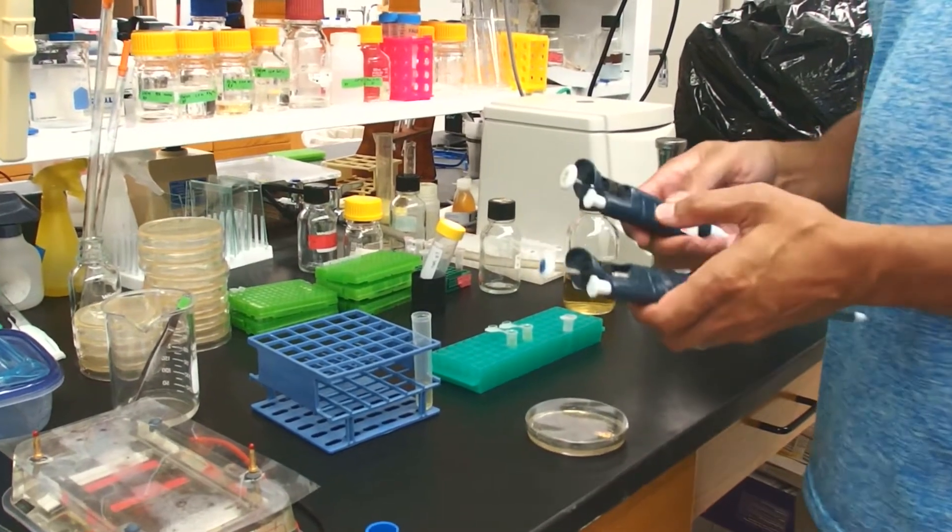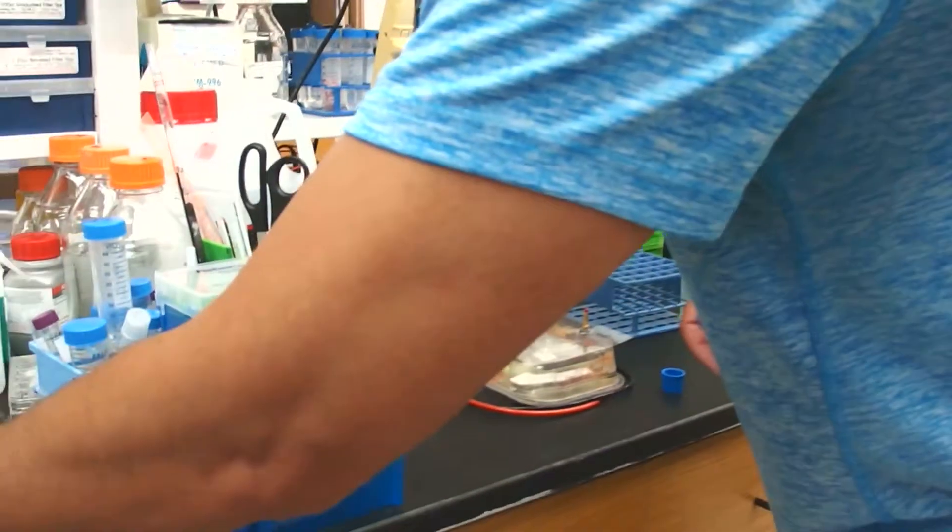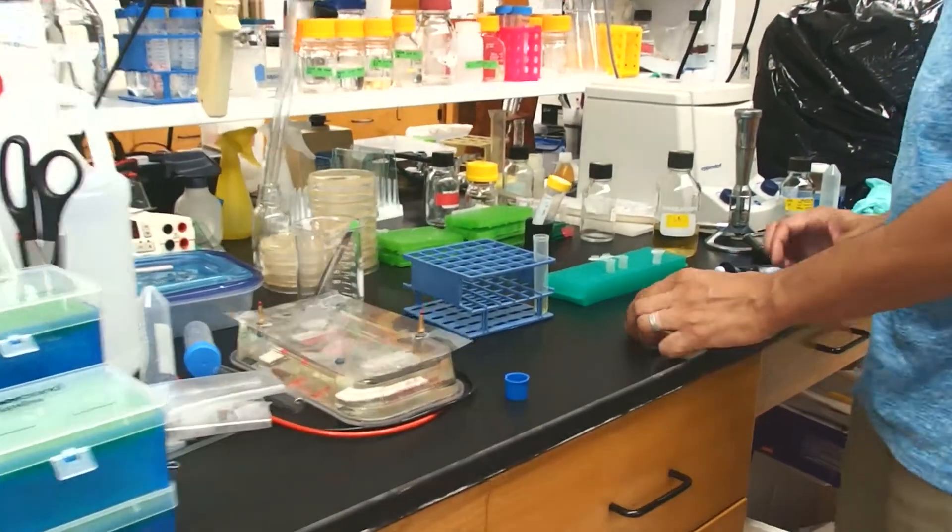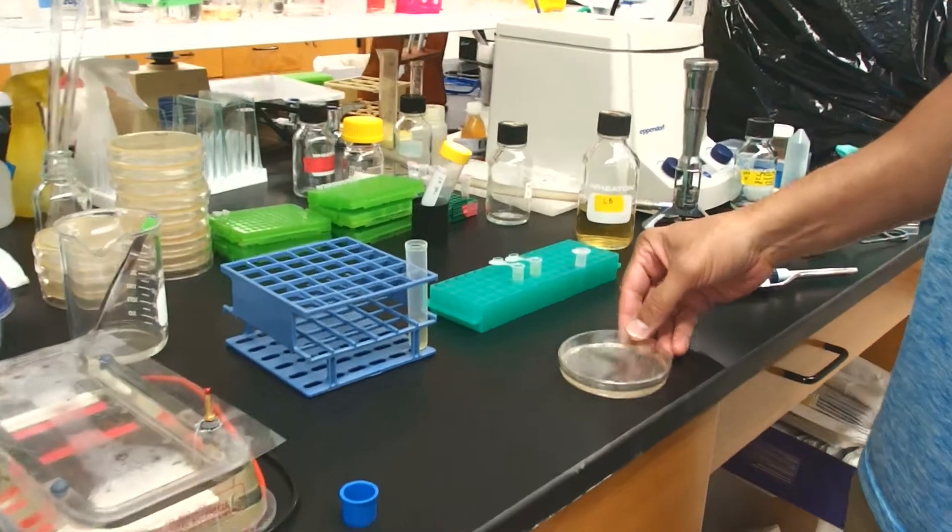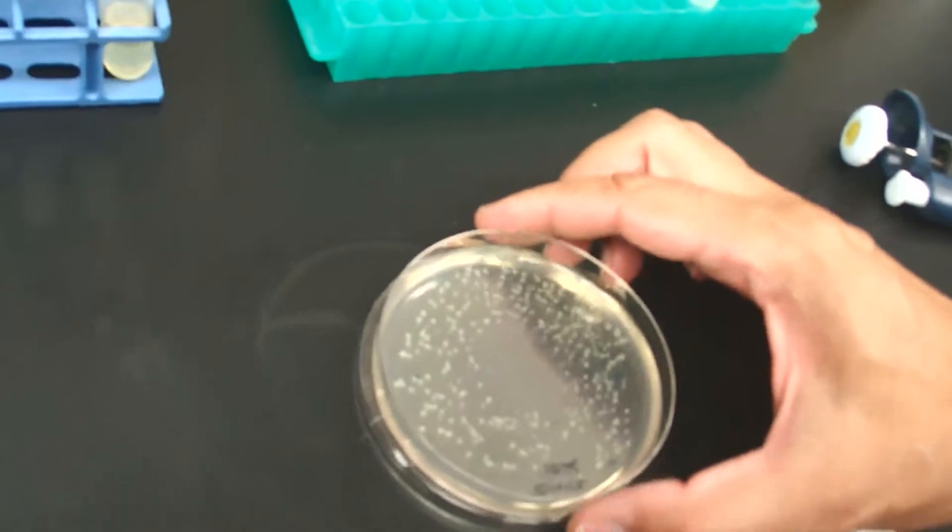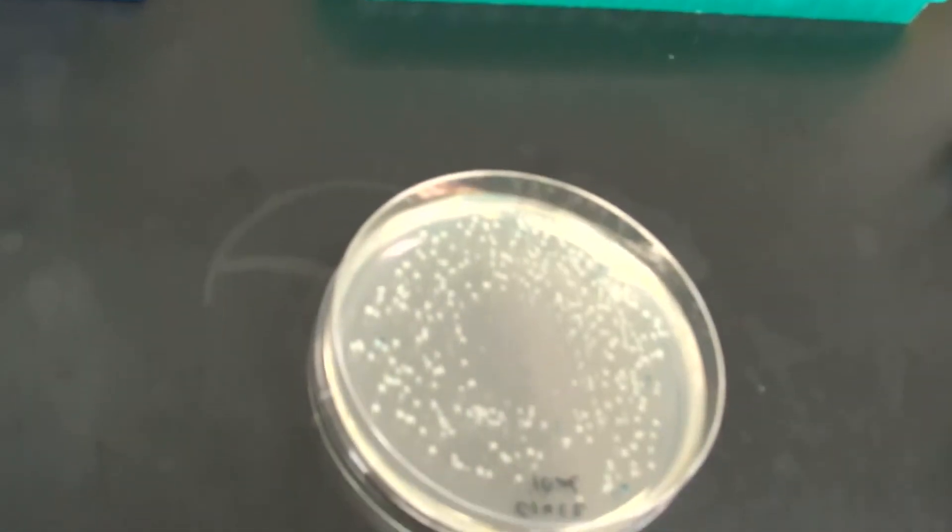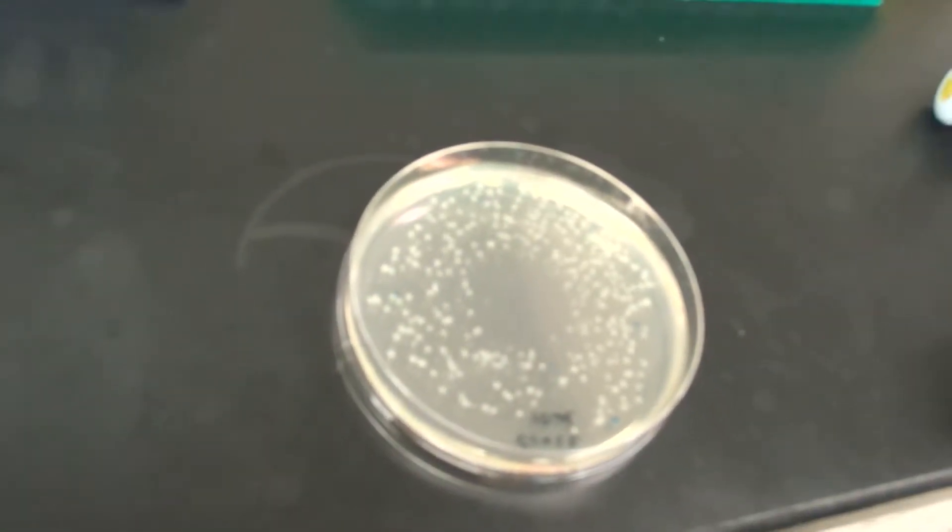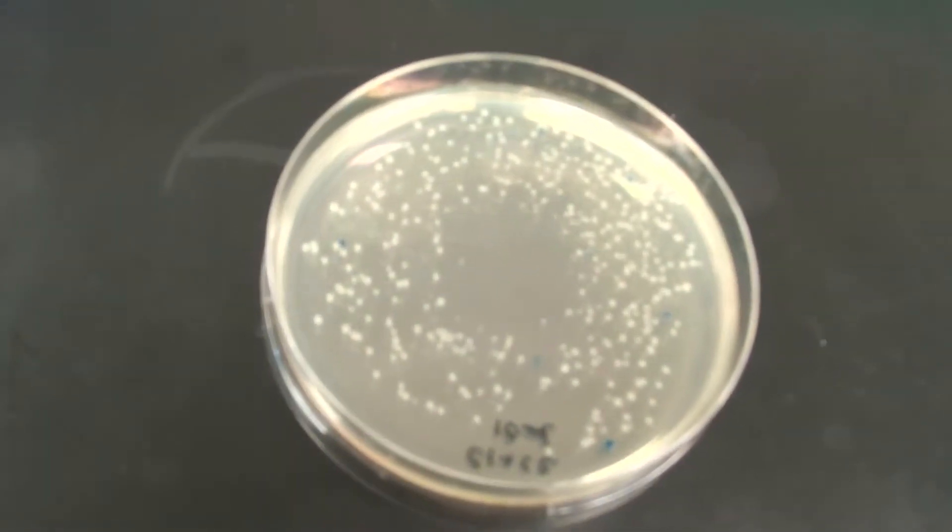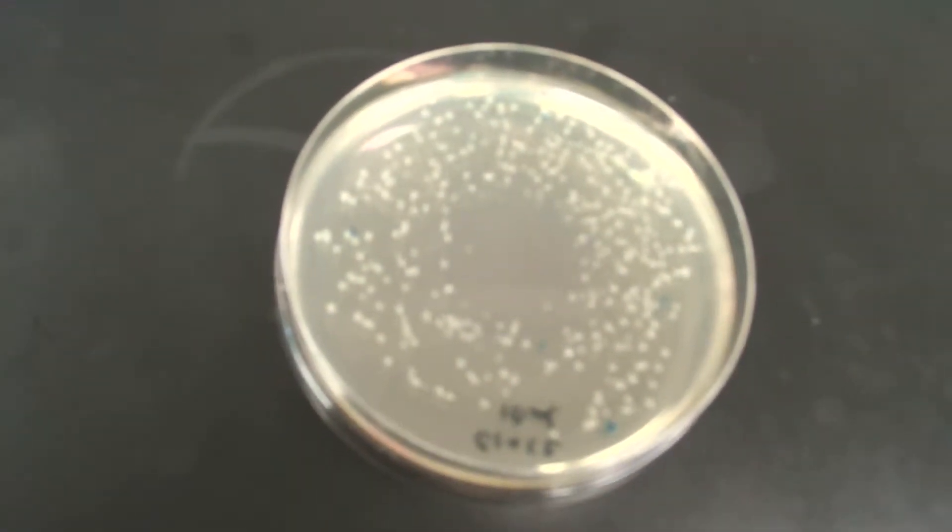The procedure is slightly different for inoculating both types of vessels. Here we have our plate that we're going to inoculate from, and in this plate you can see we have blue-white selection. Blue colonies still have the LAC-Z insert and they don't have our new insert, so we want to avoid the dark blue colonies and pick only the white colonies.